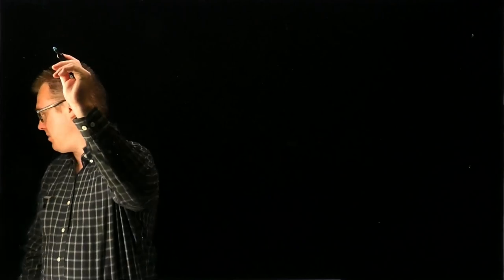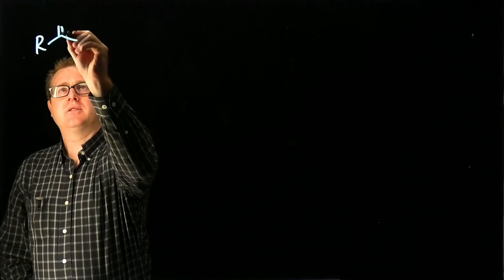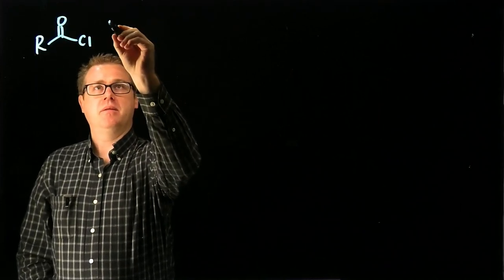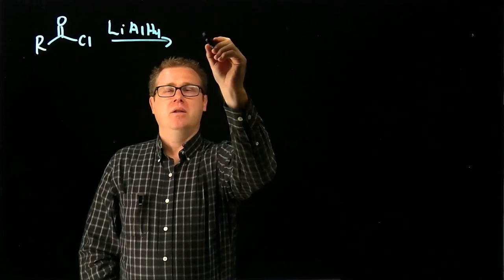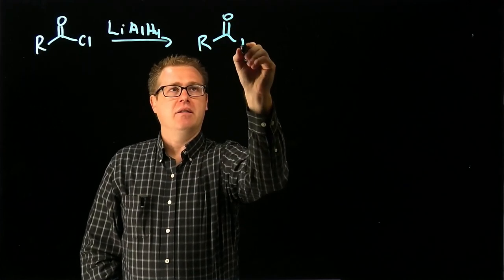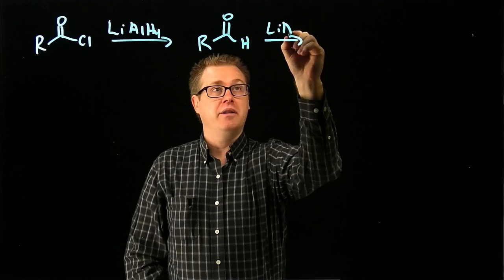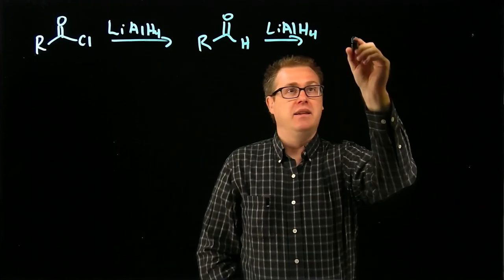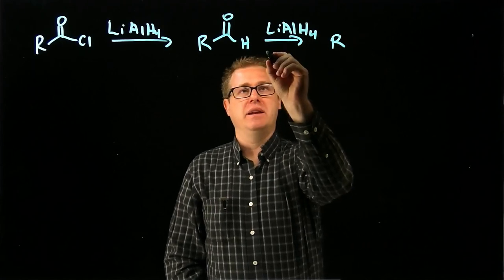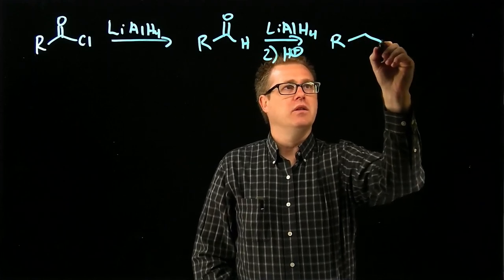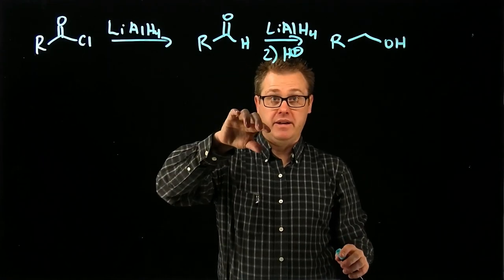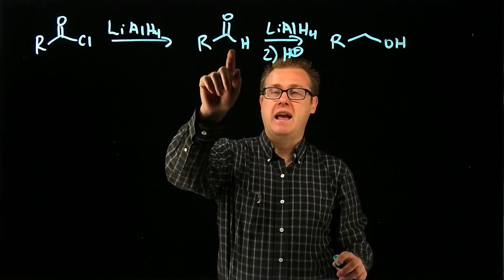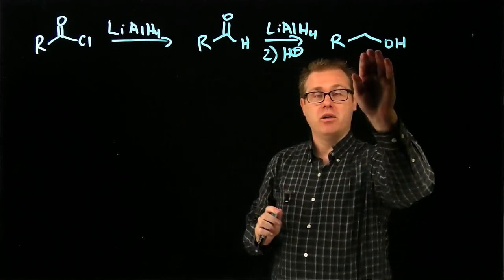Hello class. Let's review the last reaction we talked about — where we took an acid chloride and treated it with lithium aluminum hydride. We first generated the aldehyde, and then used another lithium aluminum hydride to make the alcohol after the second acidic workup. But recall that I said: what if we wanted to stop at the aldehyde instead of going all the way to the alcohol?